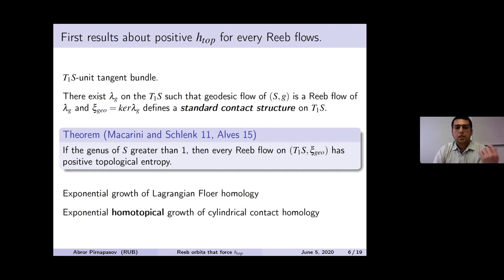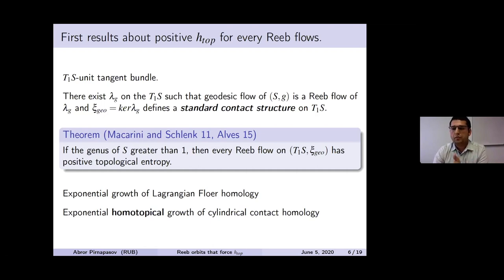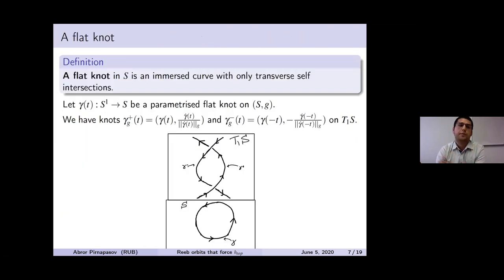We will come back to exponential homotopical growth later, as we use this notion too. If Dinaburg's result is true, one can ask: can we generalize the Deninger-Mackay result to the Reeb flow category? We will try to do this.